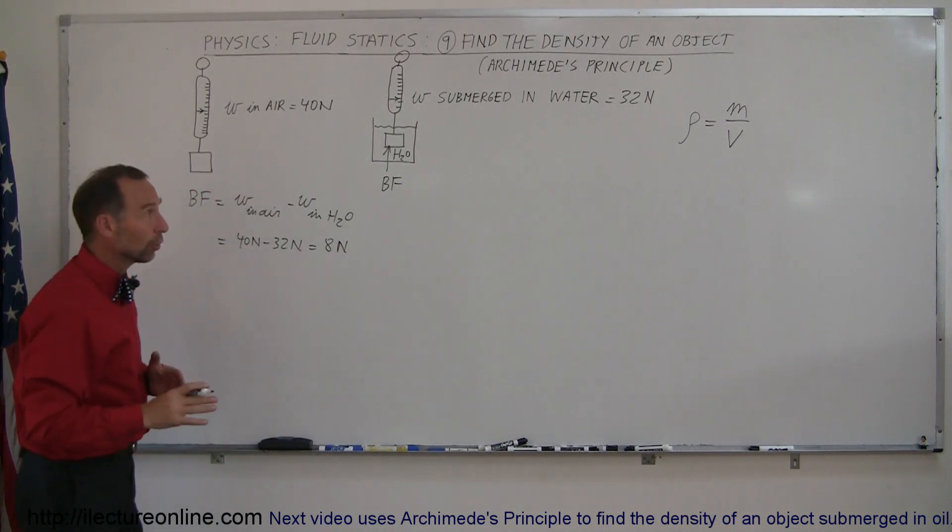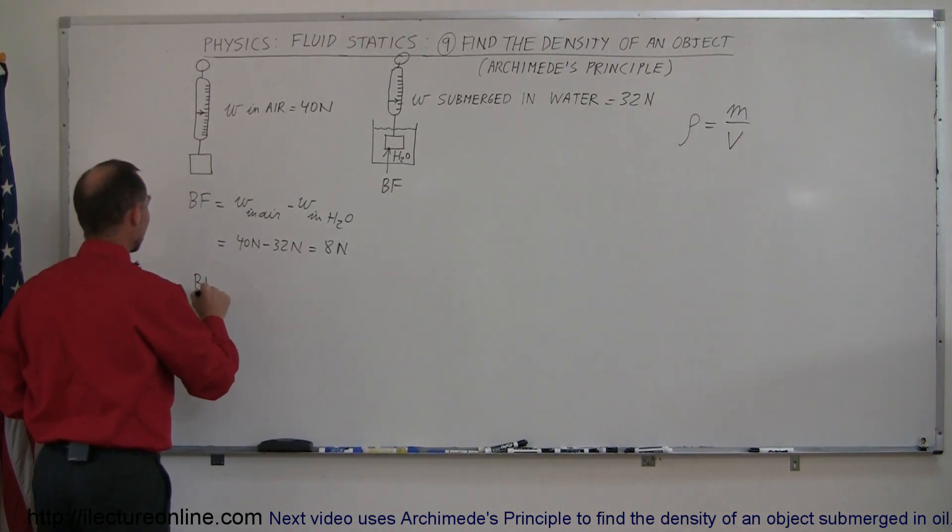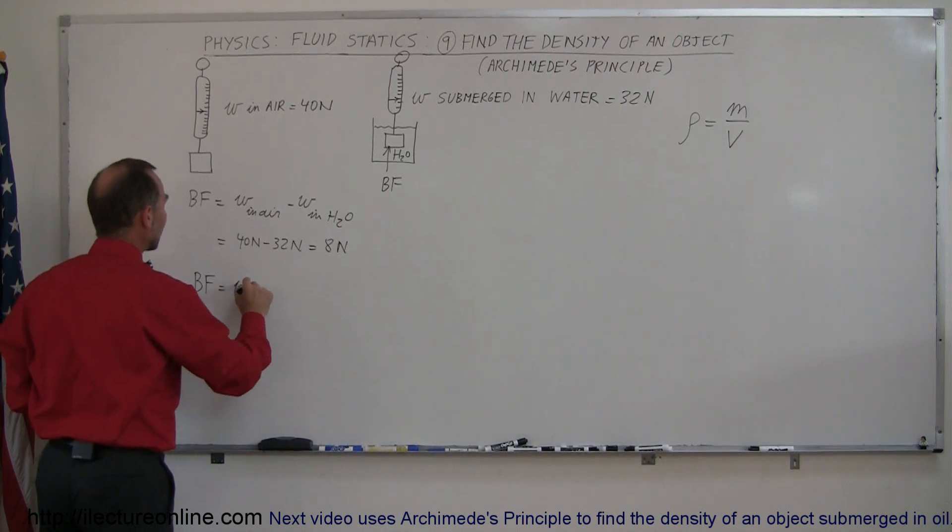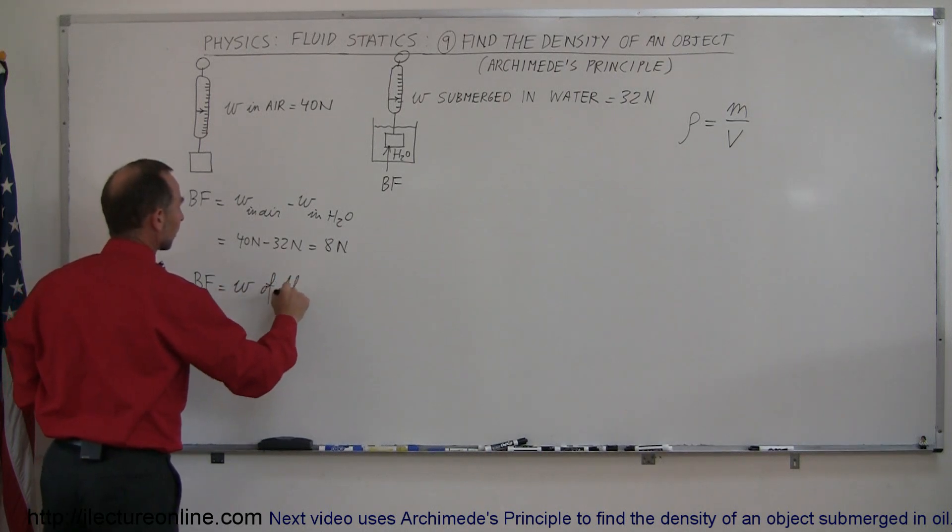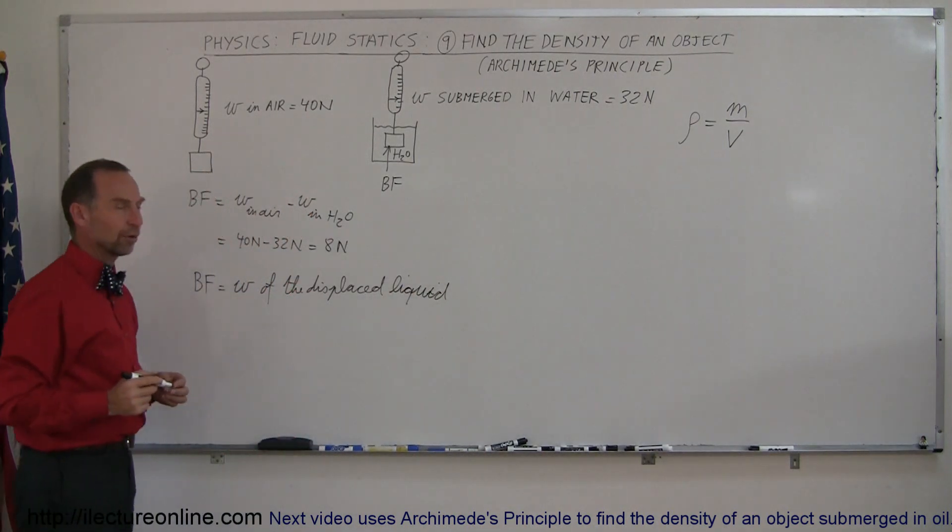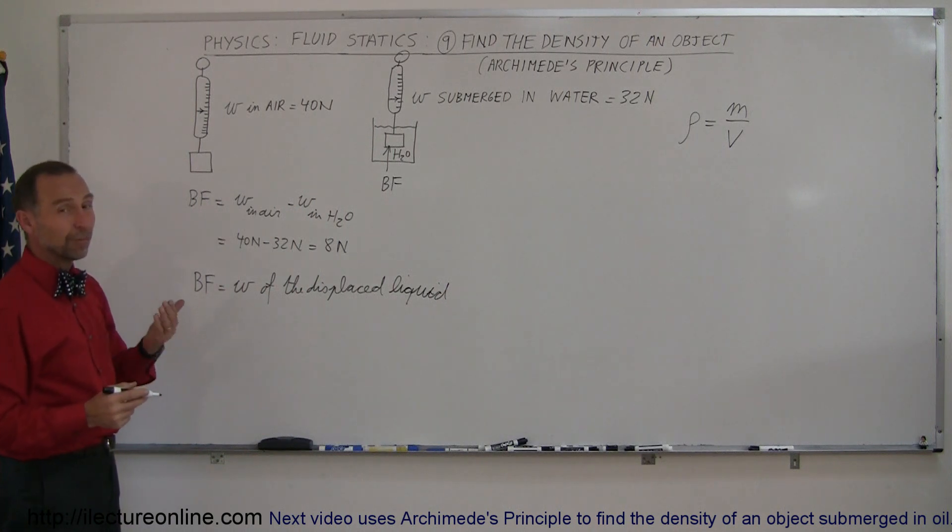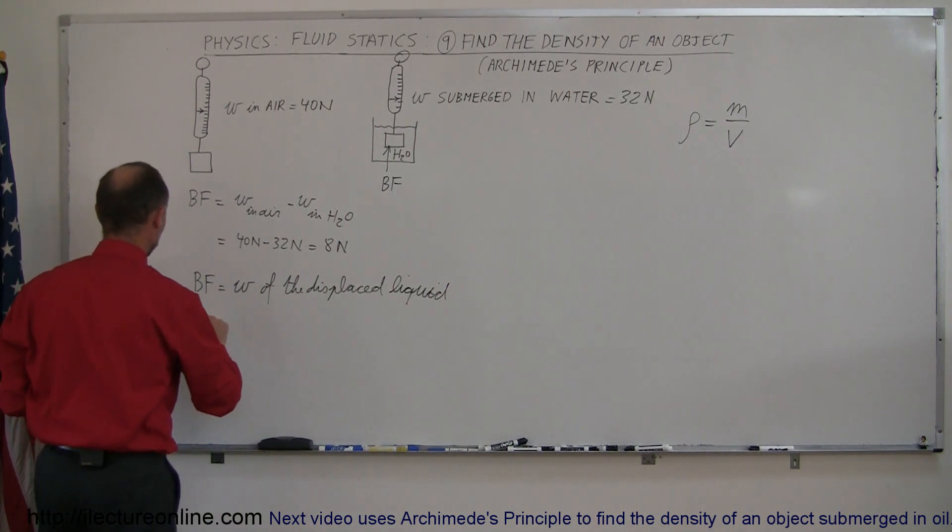And then we've also learned in the previous segment that the buoyancy force is equal to the weight of the displaced liquid. And of course, the equation for weight is W, and W is equal to the mass times acceleration due to gravity, so the buoyancy force is equal to mg.